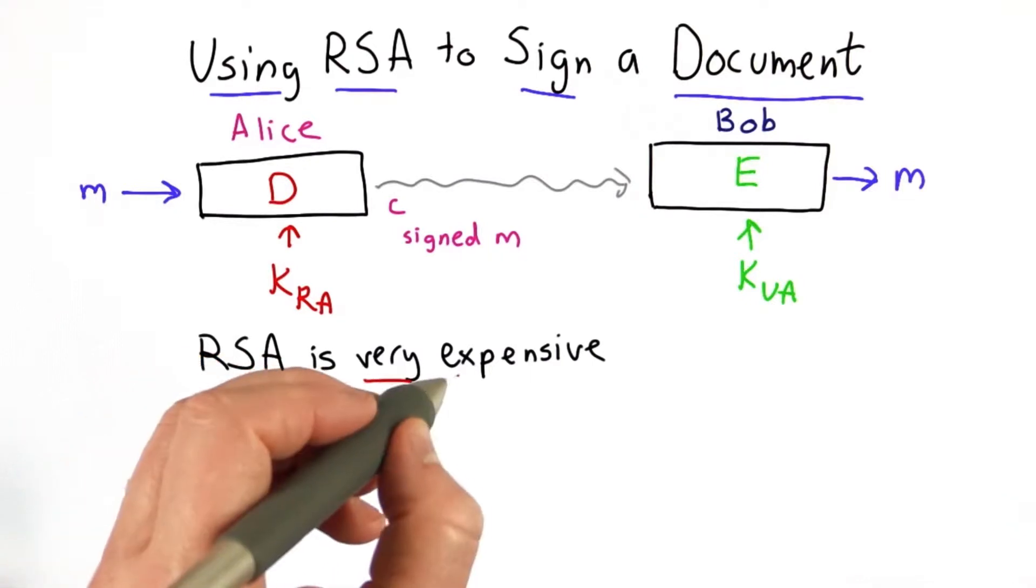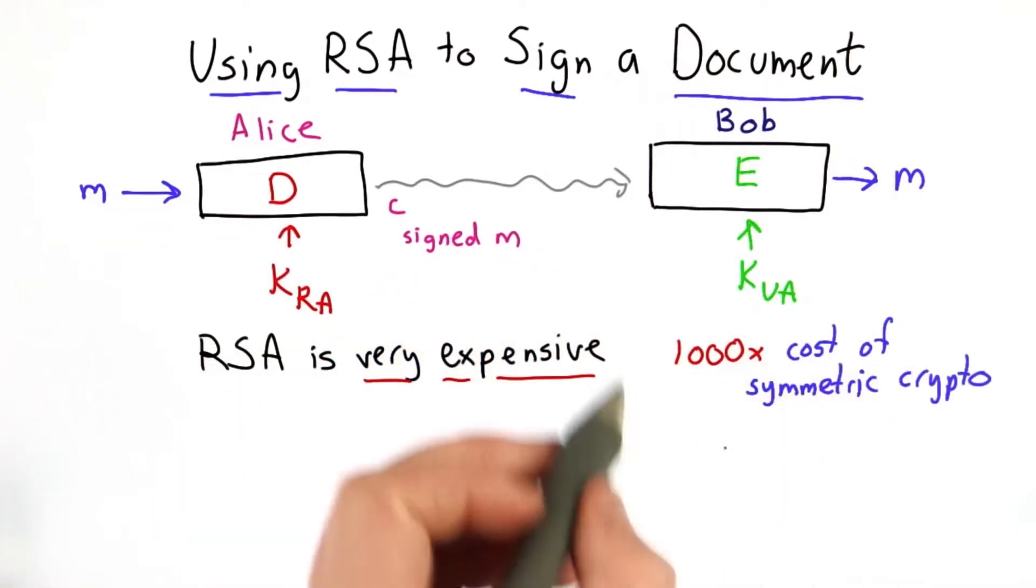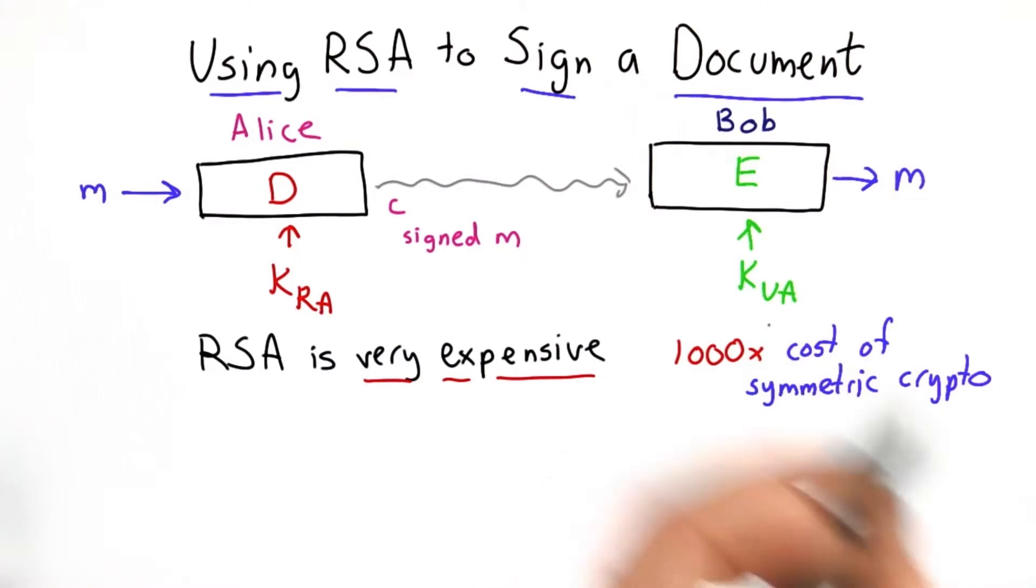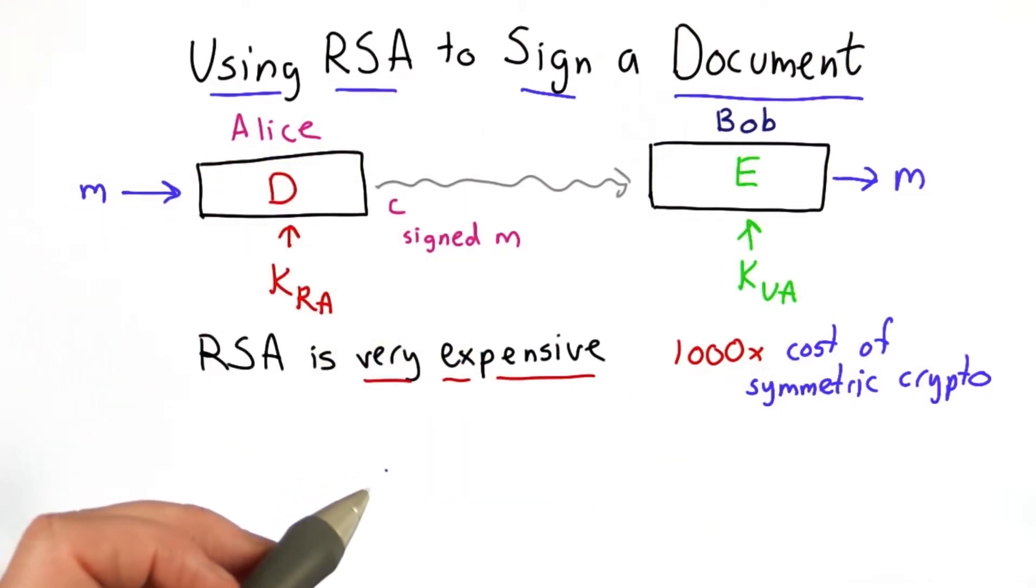The problem with this approach is RSA is very expensive. We don't want to use it on large documents. It costs about 1,000 times as much computing power to do one RSA encryption as it does to do symmetric encryption. That means we don't want to encrypt the whole document like this.